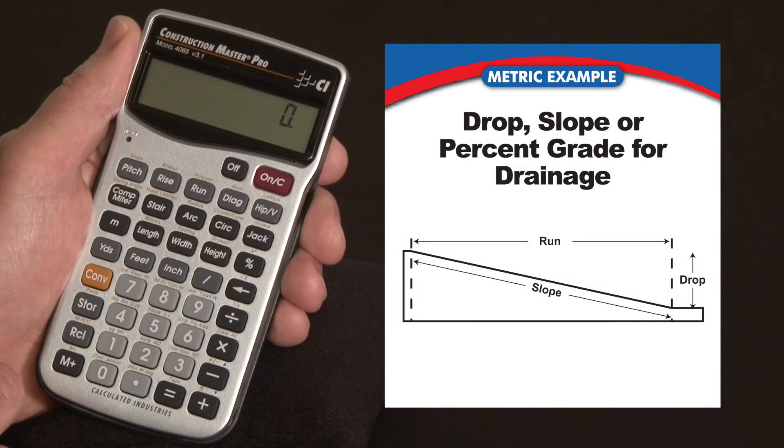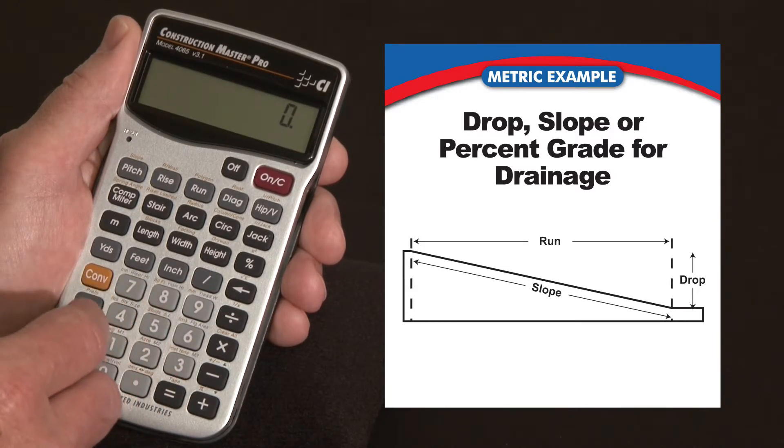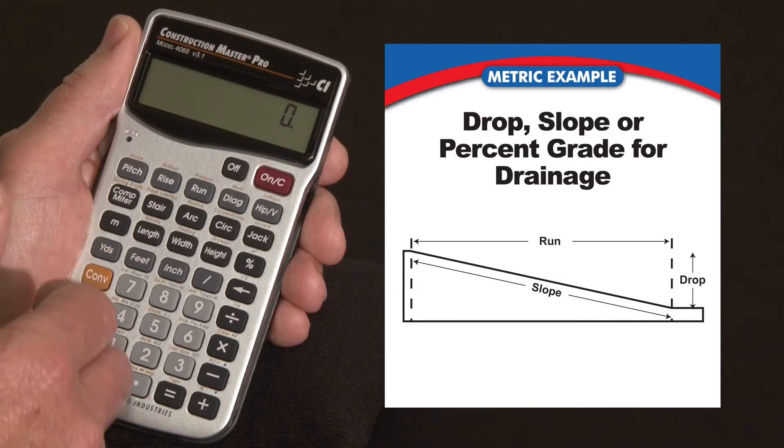Now let me show you how the Construction Master Pro can help you find the fall or slope for a pad or a driveway. Now here in the states we typically use a ratio like a quarter inch per foot or an eighth inch per foot, but in metric applications it's more often a ratio like a 1 to 60 or a 1 to 80 ratio where it's a drop over the run. So let's start off with a 1 to 60.